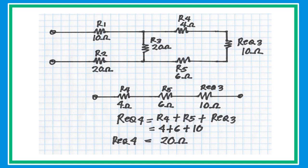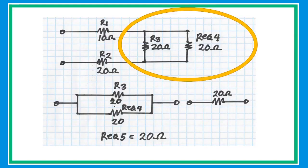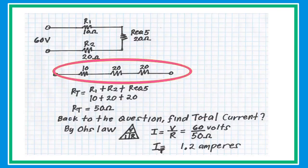Collapse and redraw the circuit again. In the new redrawn circuit, R3 and R4 are connected in parallel with the same value, so just get half to get an equivalent resistance of 20 ohms. In the final circuit, R1, R2, and R equivalent 5 are now simplified to a series circuit. Add the three resistors to get a total of 50 ohms.